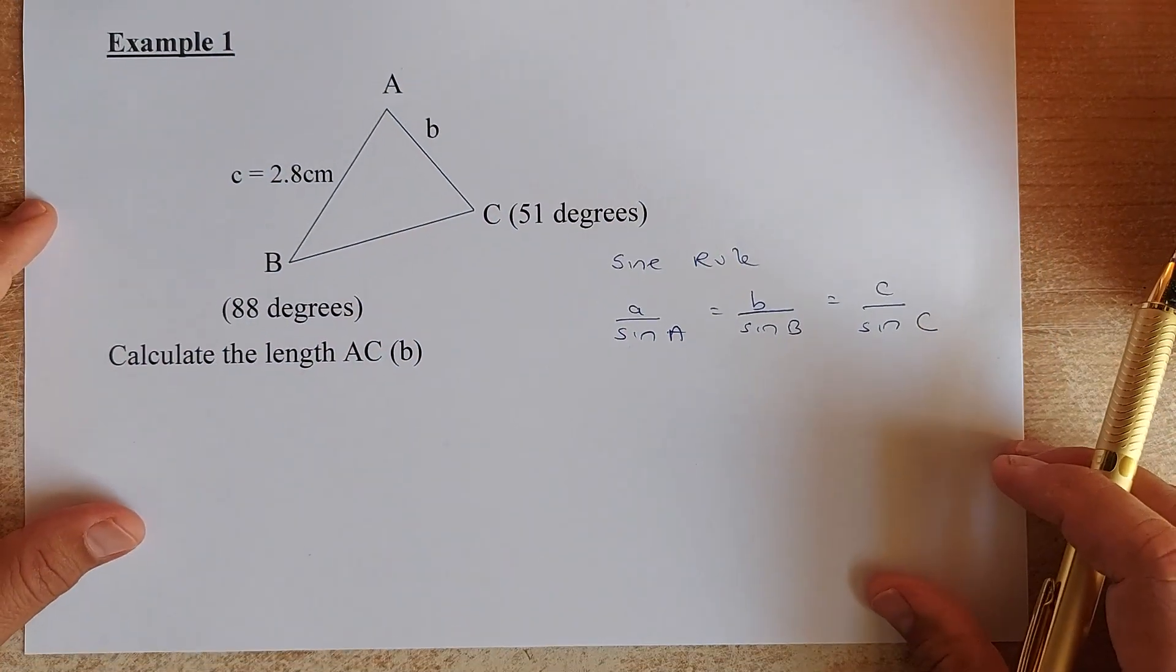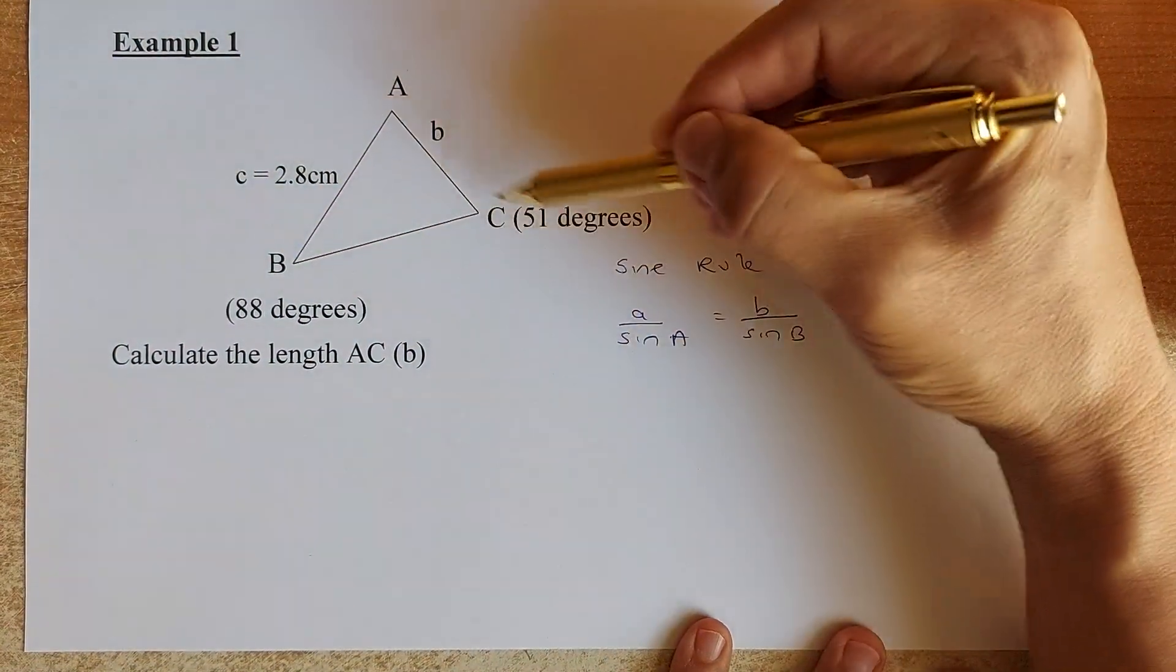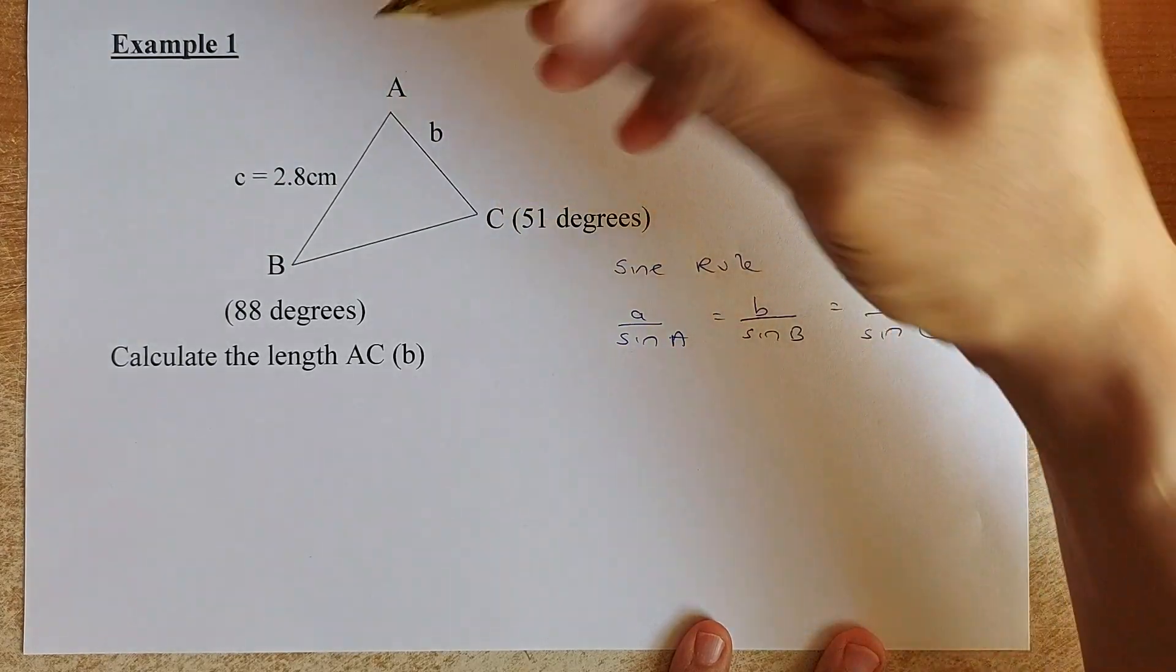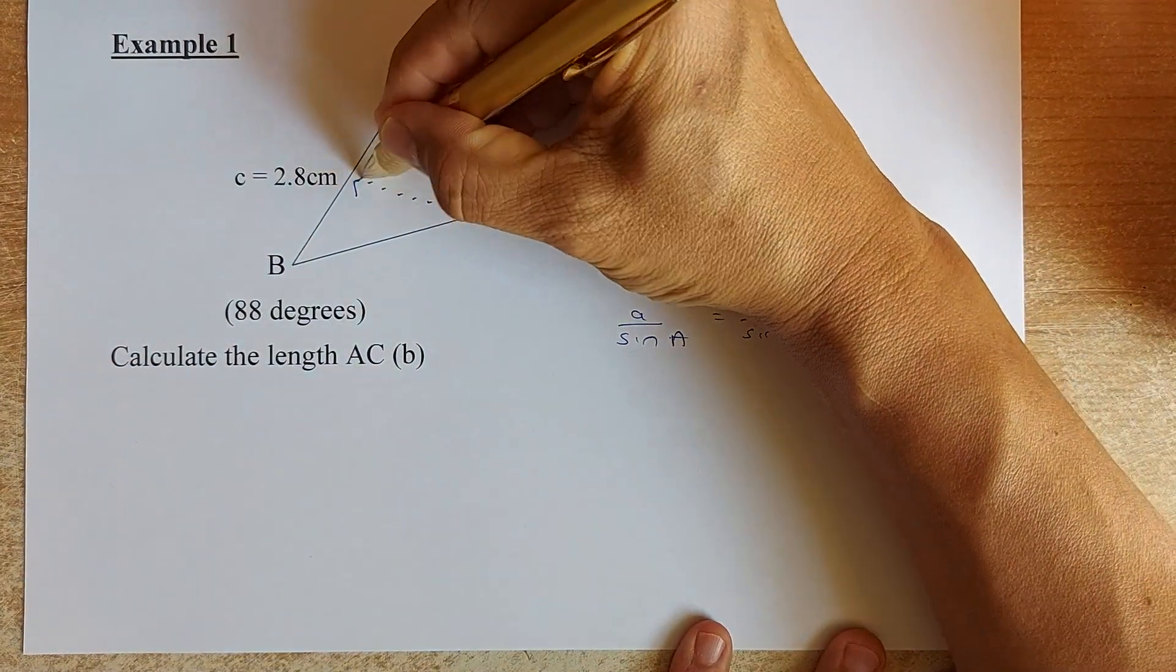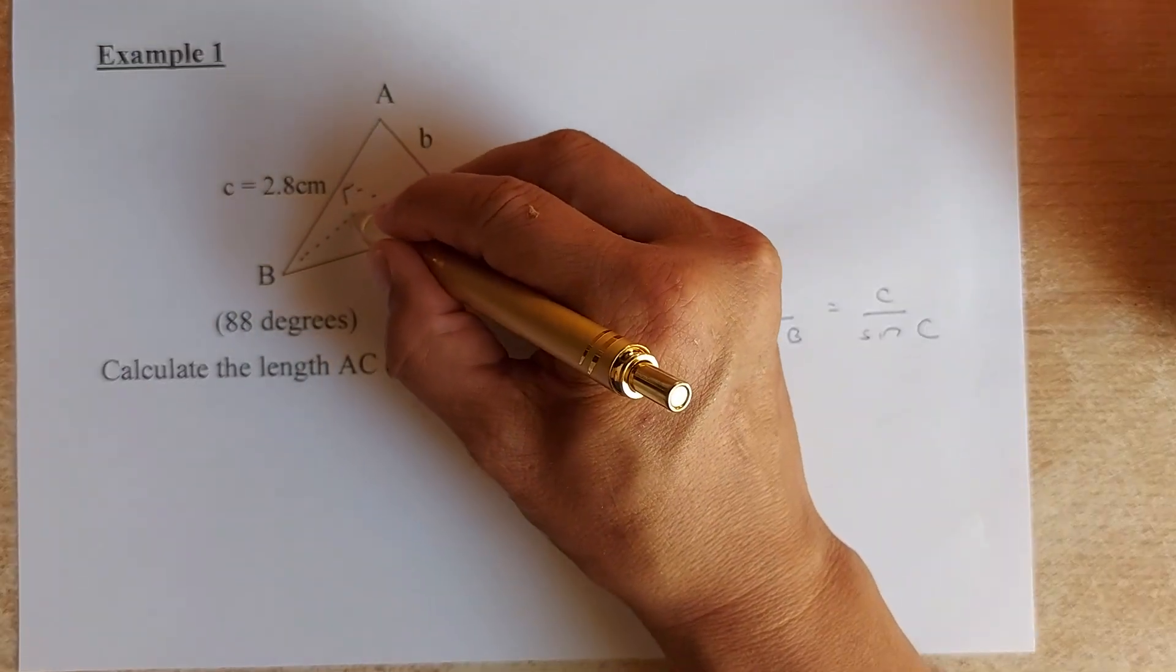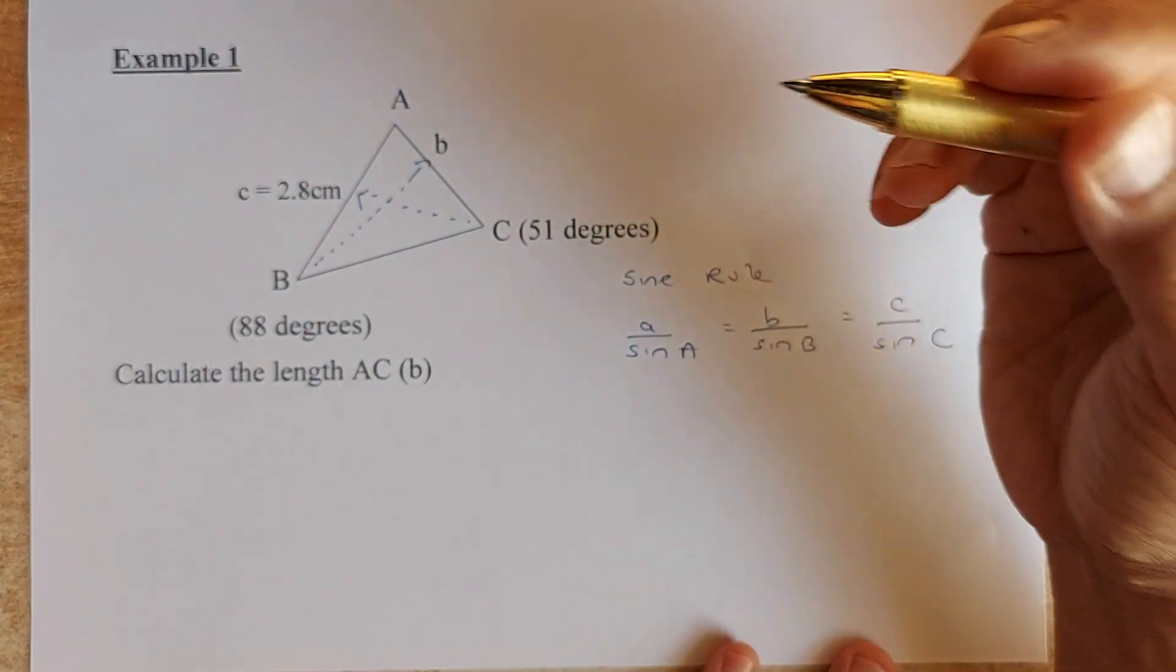The first example is, look here. Now, the triangle A, B and C. We have labelled them A, B and C. The side opposite the C is lowercase c and the side opposite the B is lowercase b.